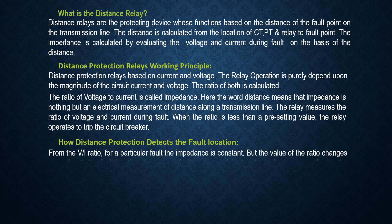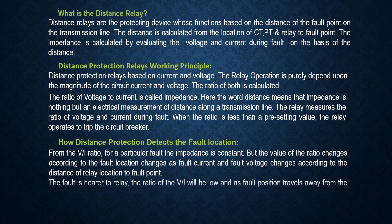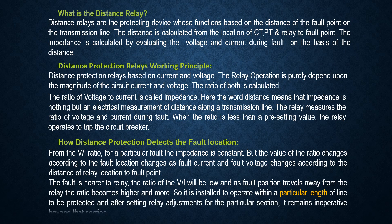From the V and I ratio, for a particular fault the impedance is constant, but the value of the ratio changes according to the fault location, as fault current and fault voltage change according to the distance from the relay location to the fault point. If the fault is nearer to the relay, the ratio of V and I will be low, and as the fault position moves away from the relay, the ratio becomes higher.